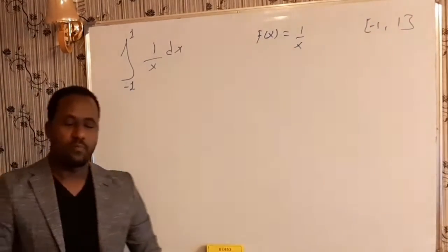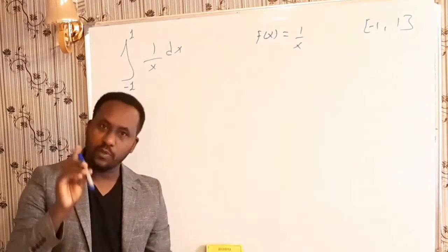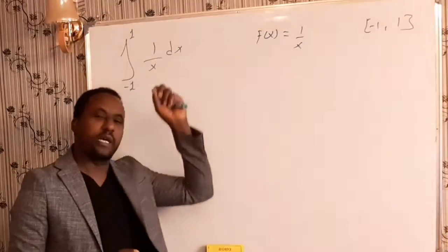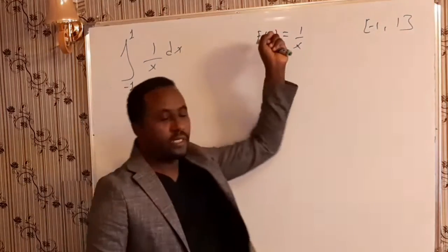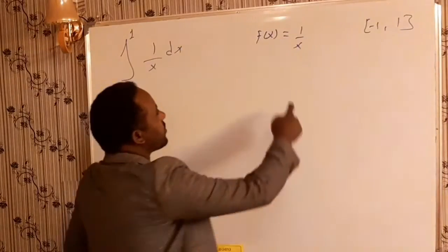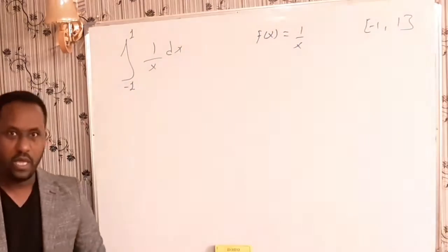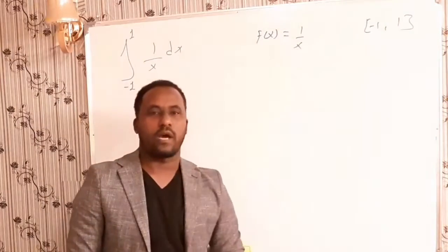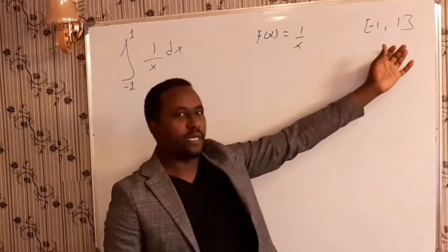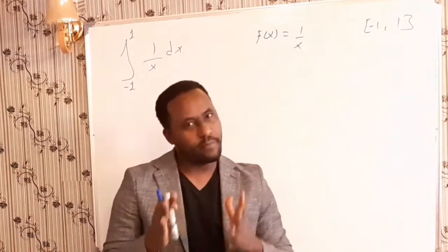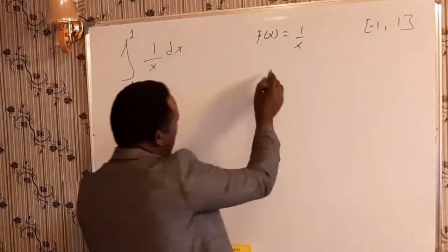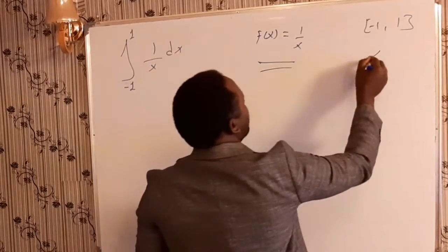This shows a particular example of a definite integral. In order to solve this problem, first of all, you have to be careful whether the integrand of this function is continuous or not on the given interval. The integrand of this problem is f(x) = 1/x, and the given interval is minus 1 to 1. Always, in the case of a definite integral, we have to check whether the integrand is continuous or not on the given interval. This function is not continuous on this interval because it is discontinuous at x = 0.